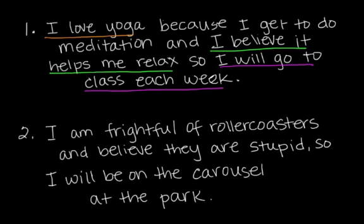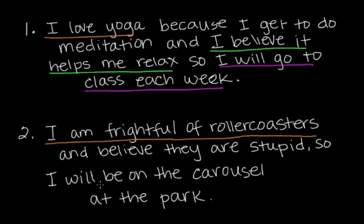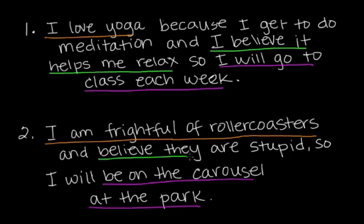The second sentence: I am frightful of roller coasters and believe they are stupid, so I will be on the carousel at the park. The affective component is I am frightful of roller coasters — fright is an emotion, a fear. The behavioral component is I will be on the carousel at the park — the word be indicates an action; because you're afraid of roller coasters, you're going to be somewhere else. The cognitive component is I believe roller coasters are stupid — believe is the magic word, it's a belief, possibly based on some knowledge. That is the cognitive component of attitude.